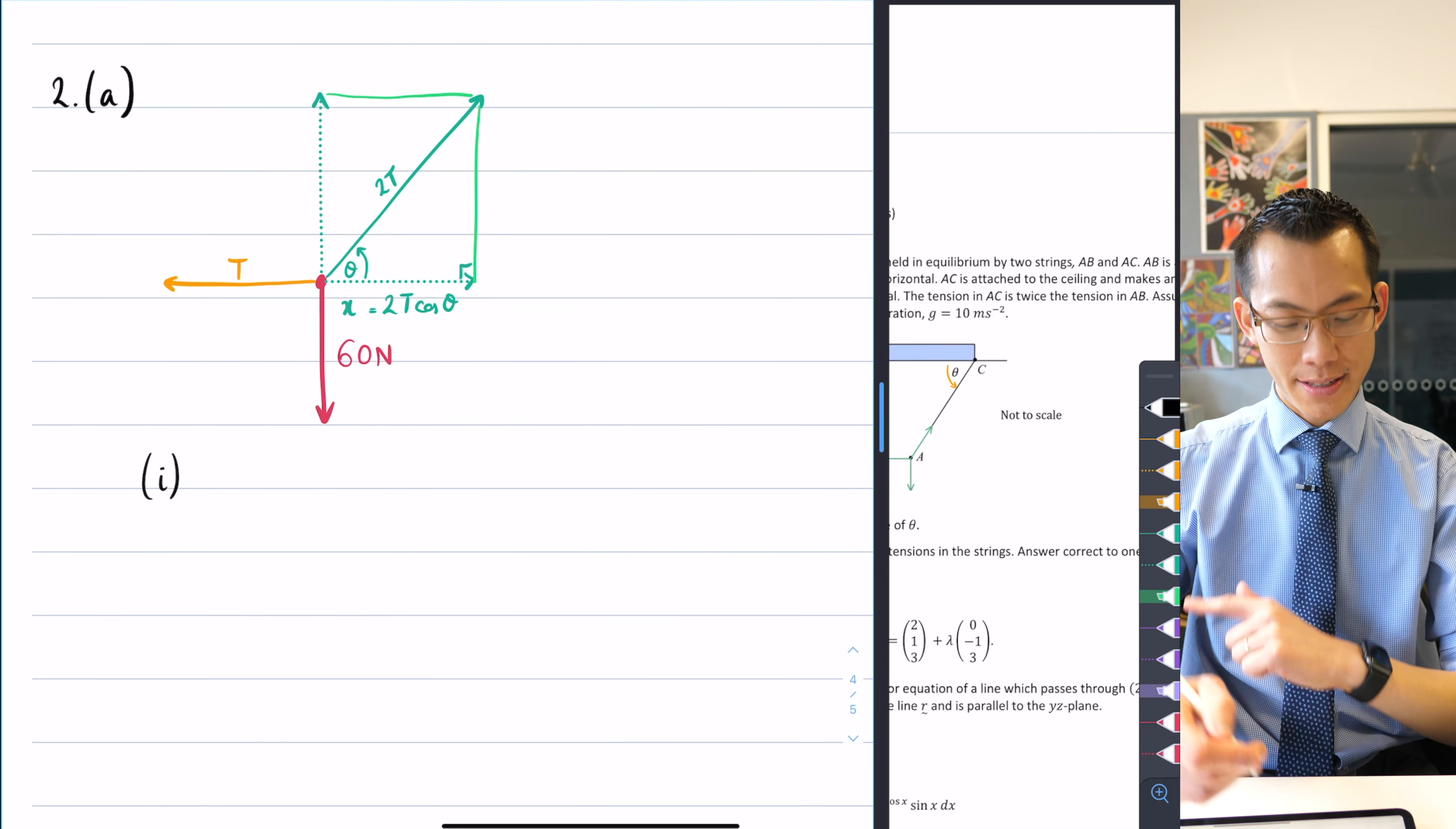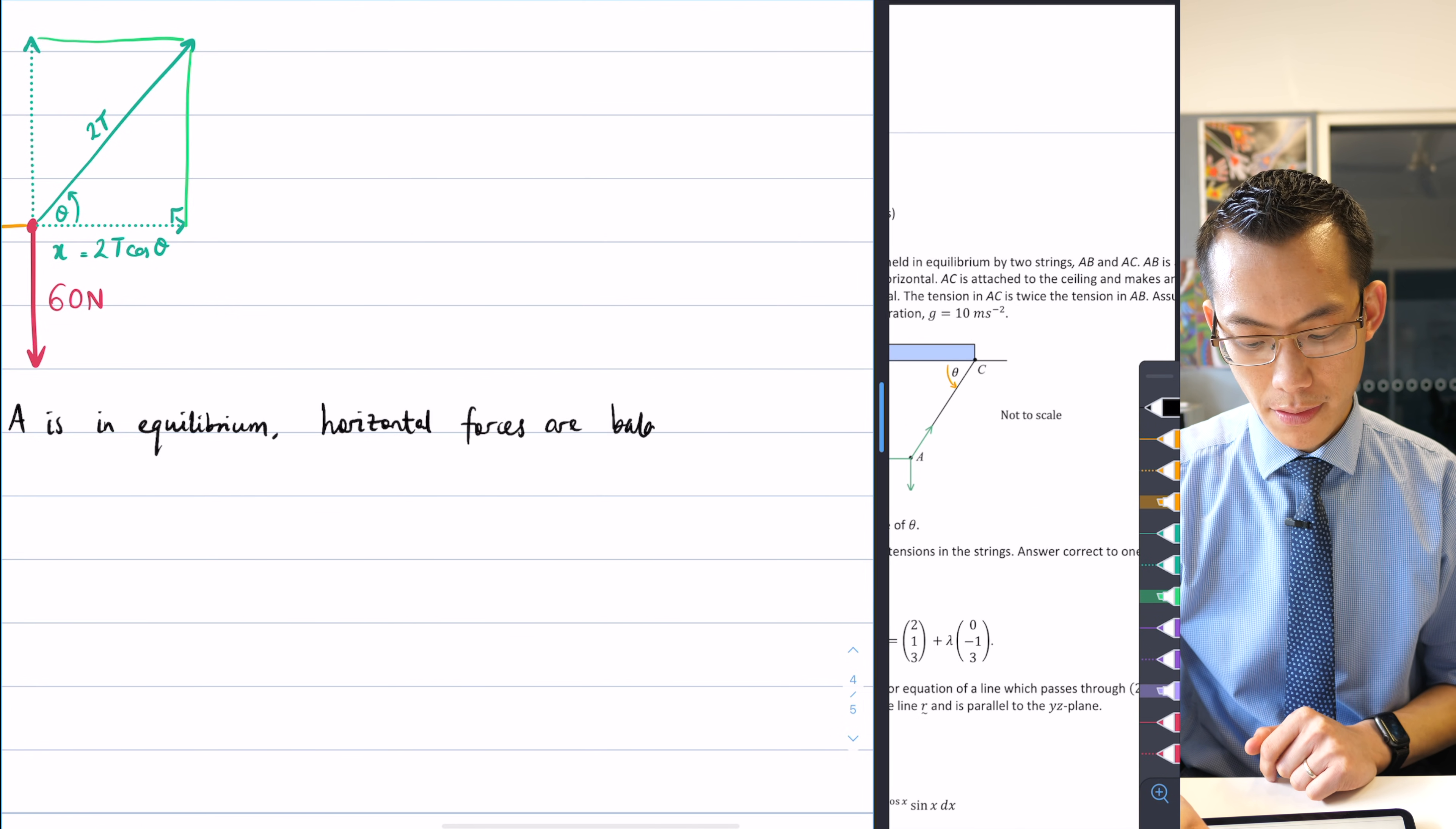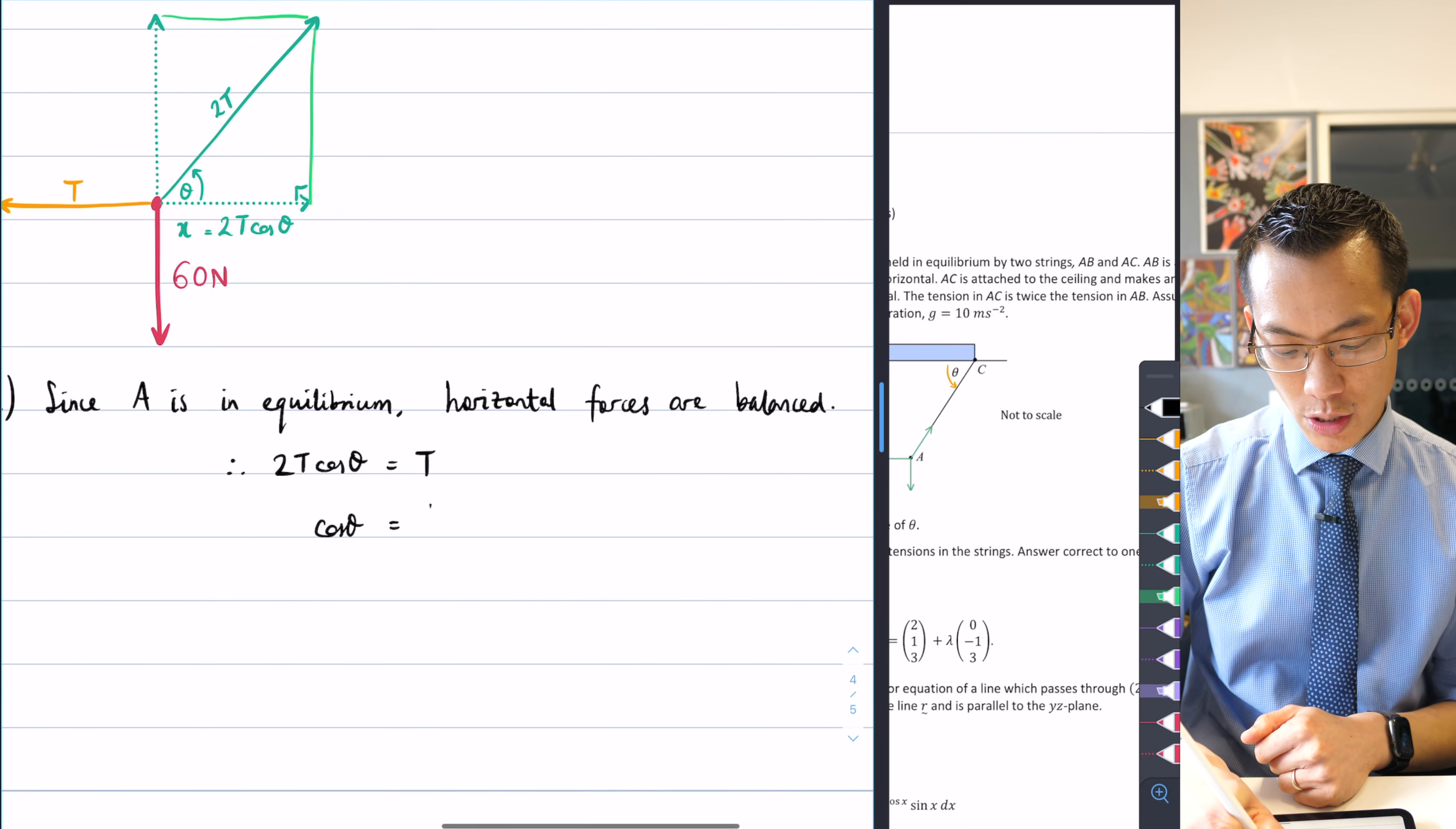Part one, I can say since A is in equilibrium, the horizontal forces are balanced. Therefore I can say 2t cos theta, which is what I got from that right-hand force, and then t, which is what I get from that left-hand force, they're going to be equal. I can divide through by t because it's a non-zero quantity, and while I'm dividing by t, I'm also going to divide by 2, which gives me cos theta equals 1 over 2.